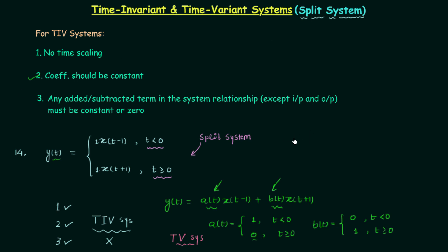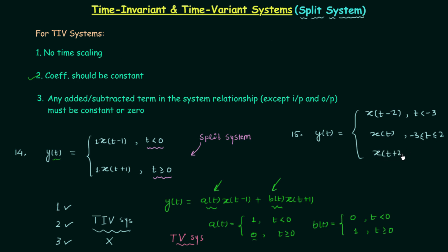Now we move to the fifteenth problem. Here y(t) = x(t−2) when t < −3, y(t) = x(t) when −3 ≤ t ≤ 2, and y(t) = x(t+2) when t > 2. There is clearly a condition on time, so it is a split system, and split systems are always time variant. You can represent this in a combined form with three time-dependent coefficients, which violates condition 2, confirming the system is time variant. From the next lecture we will start linear and nonlinear systems.